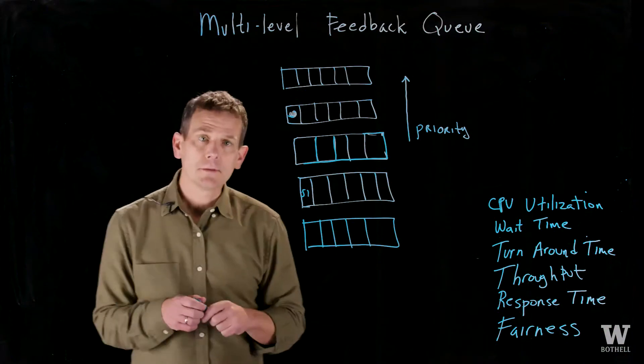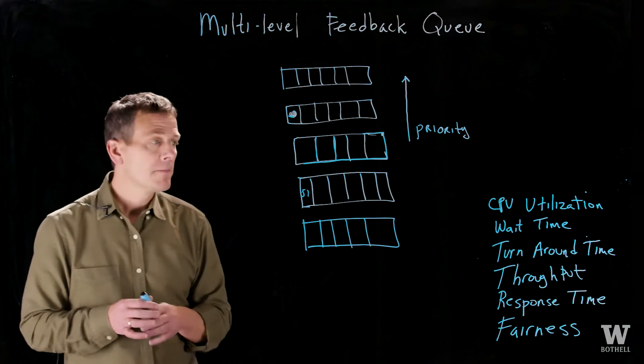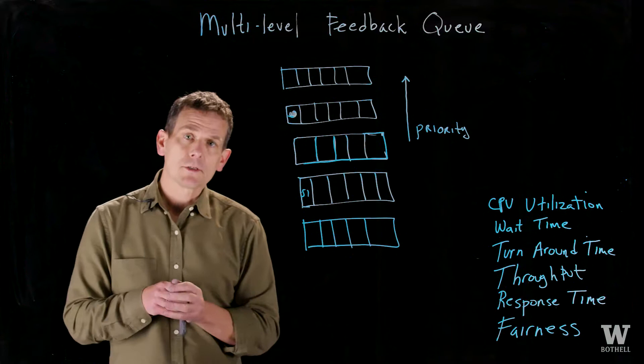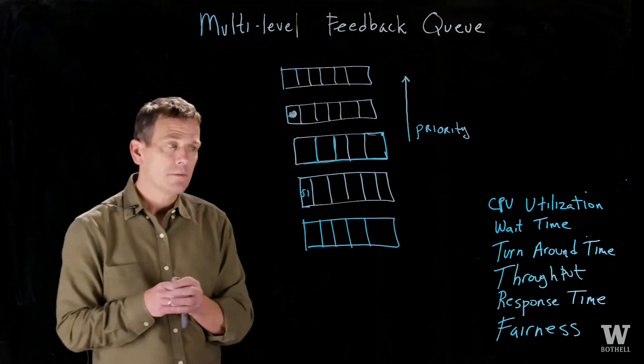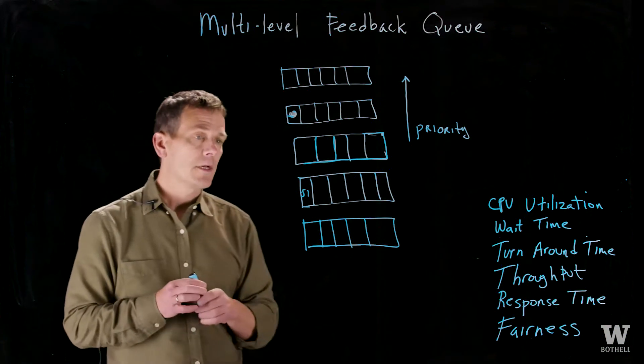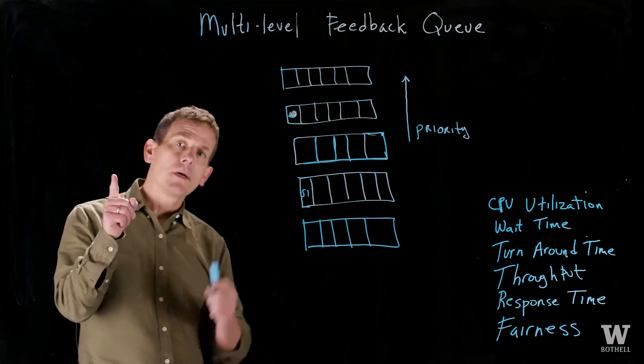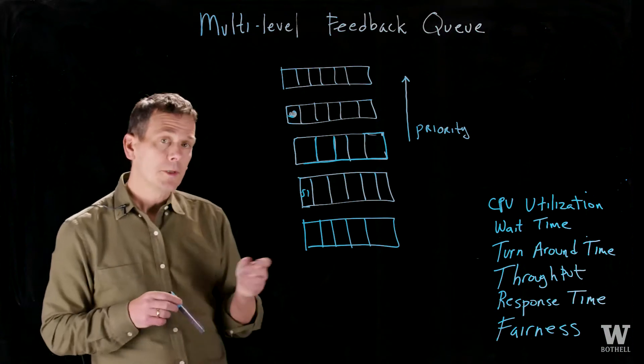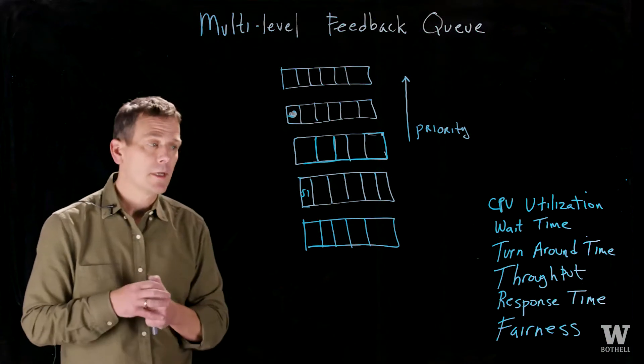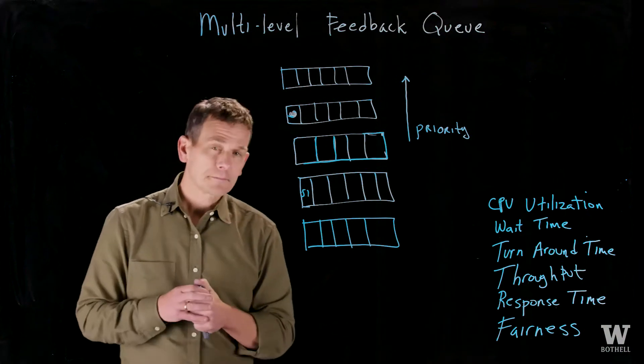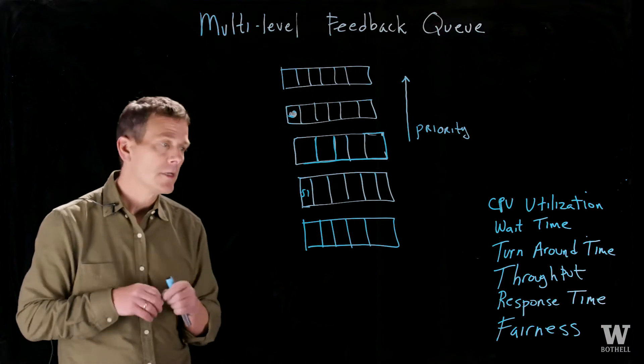We've talked about CPU utilization, which is the amount of time a CPU is busy. We've talked about wait time, which is the amount of time jobs wait to get the CPU. We've talked about turnaround time, the time from the entry of the job until it's finished, throughput, number of jobs per unit time, response time, how quickly the job responds, and fairness.